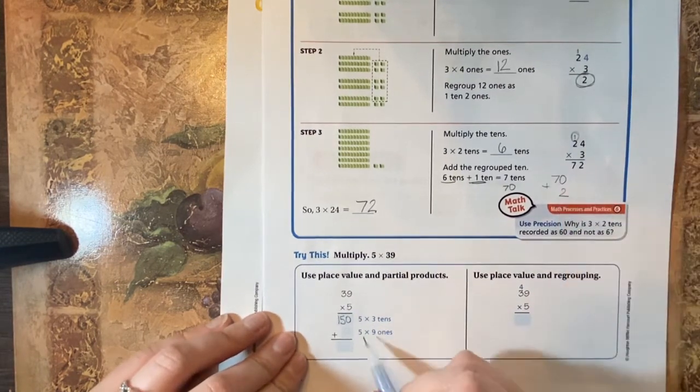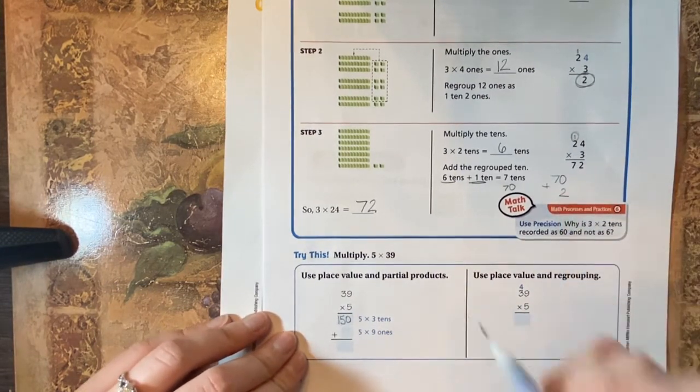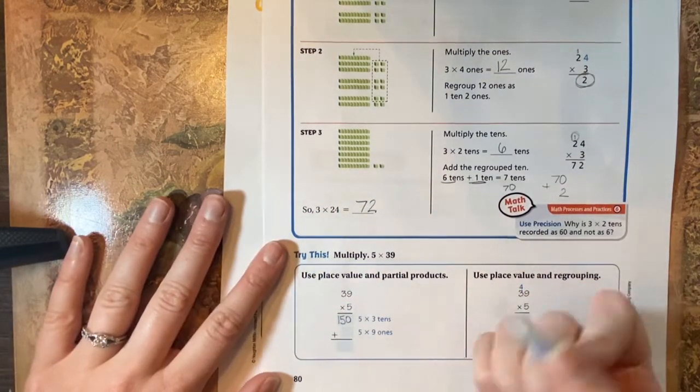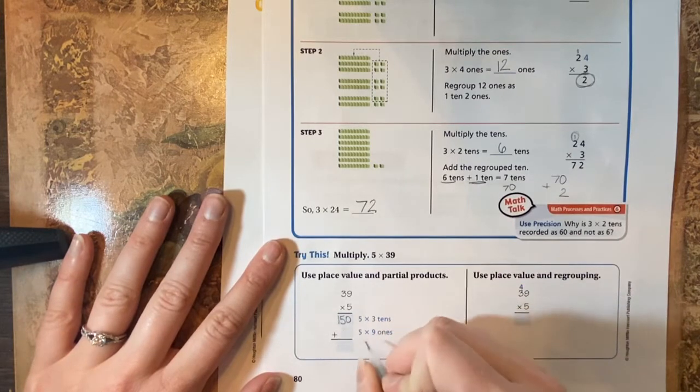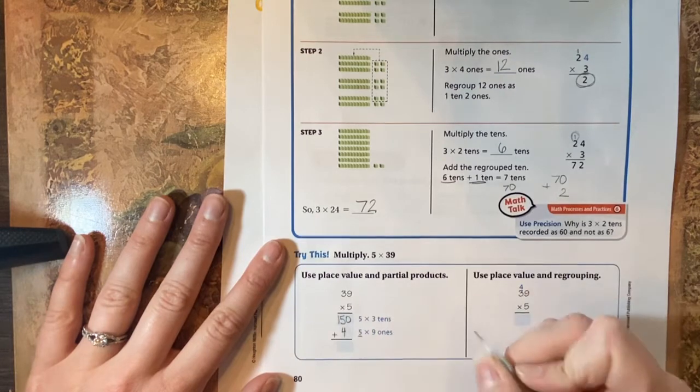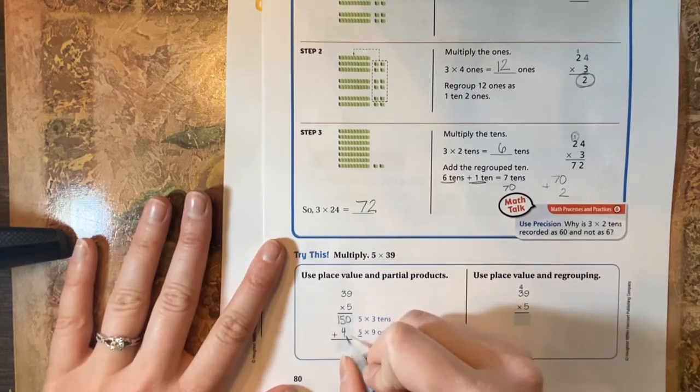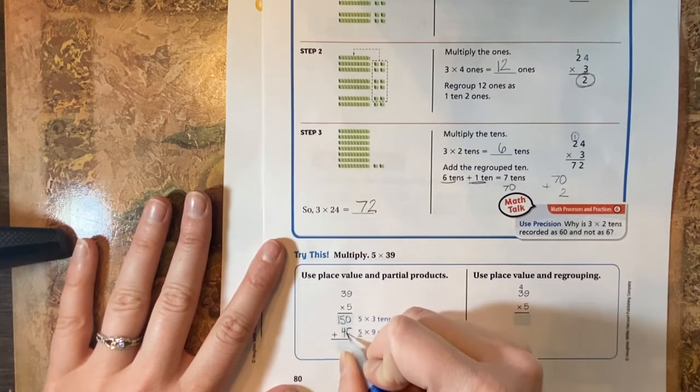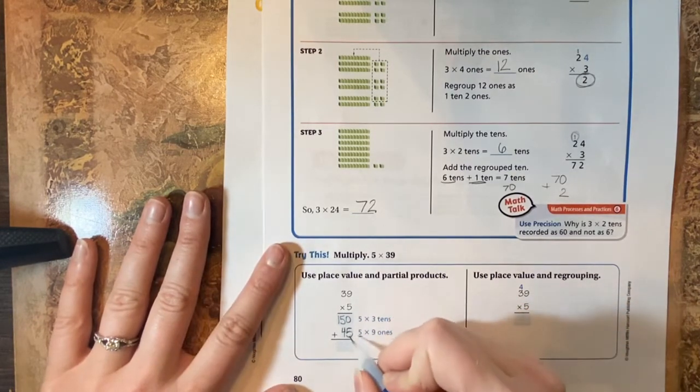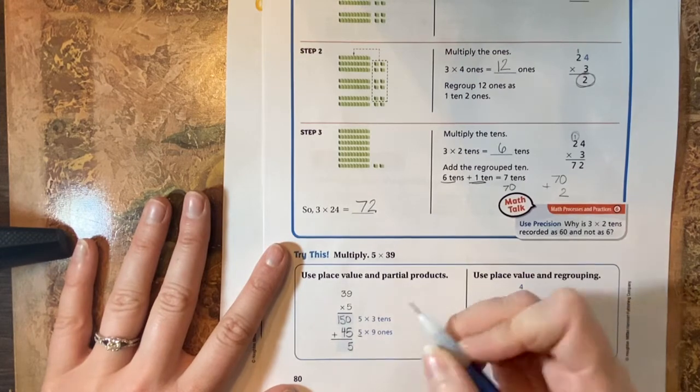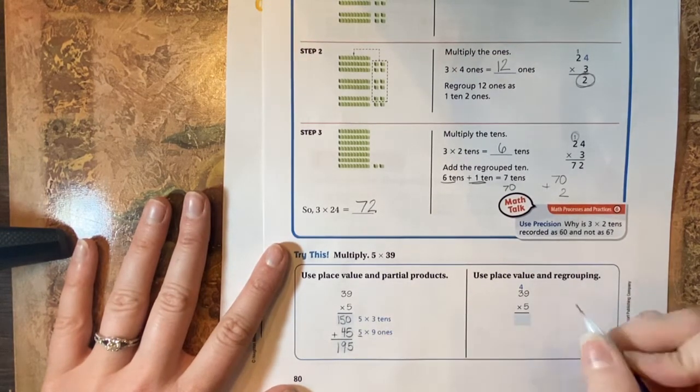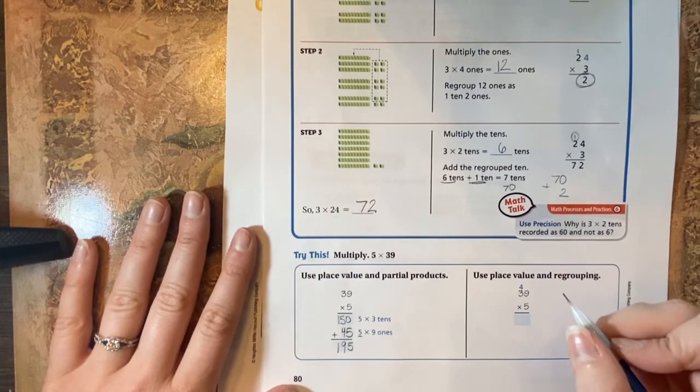Then if we do five times nine ones, we remember that five times nine, we can do that by knowing our nines trick. So the tens digit is going to be one less than the number you multiplied by nine, which is a four. One less than five is four. And then to get to nine, we have to add five. So that answer is 45. Then we add those together. Zero plus five is five, five plus four is nine, and one plus zero is one. So the product is 195.